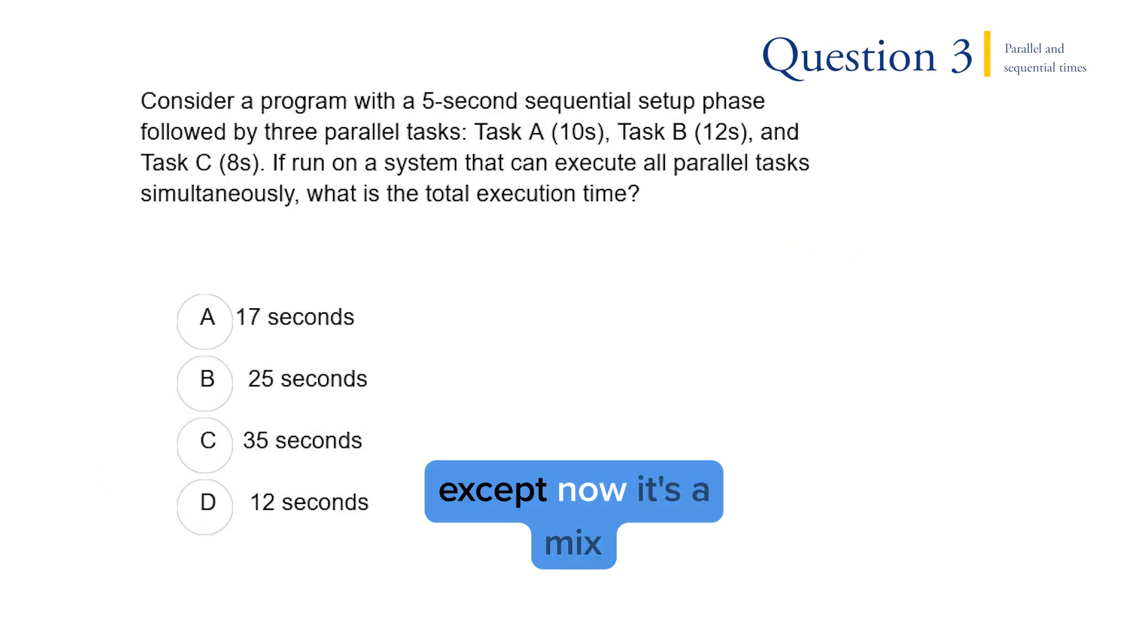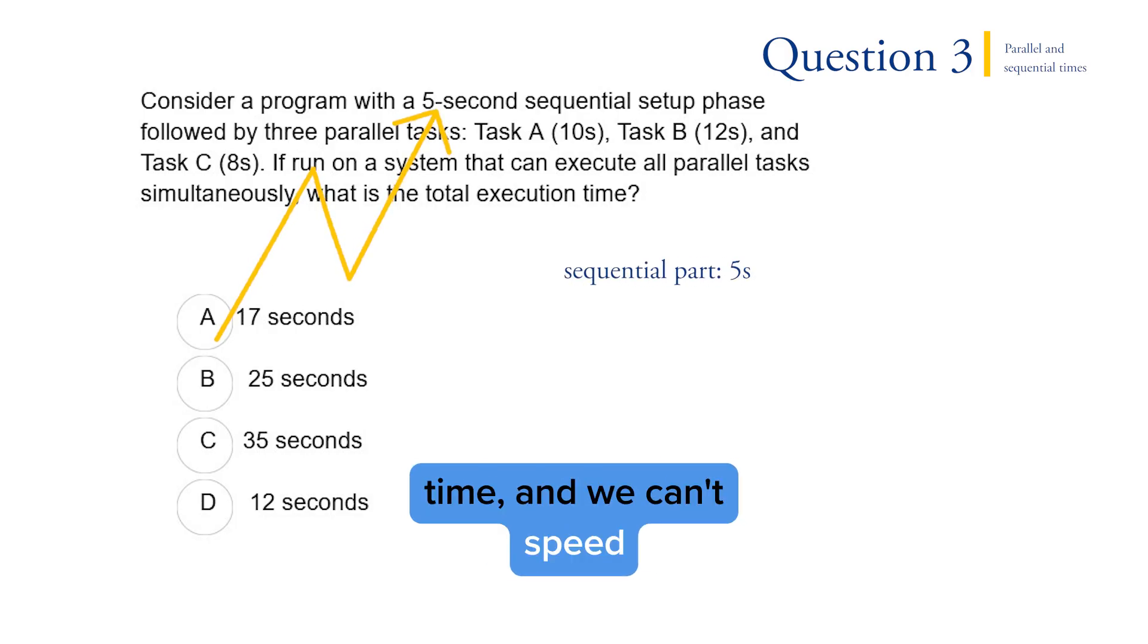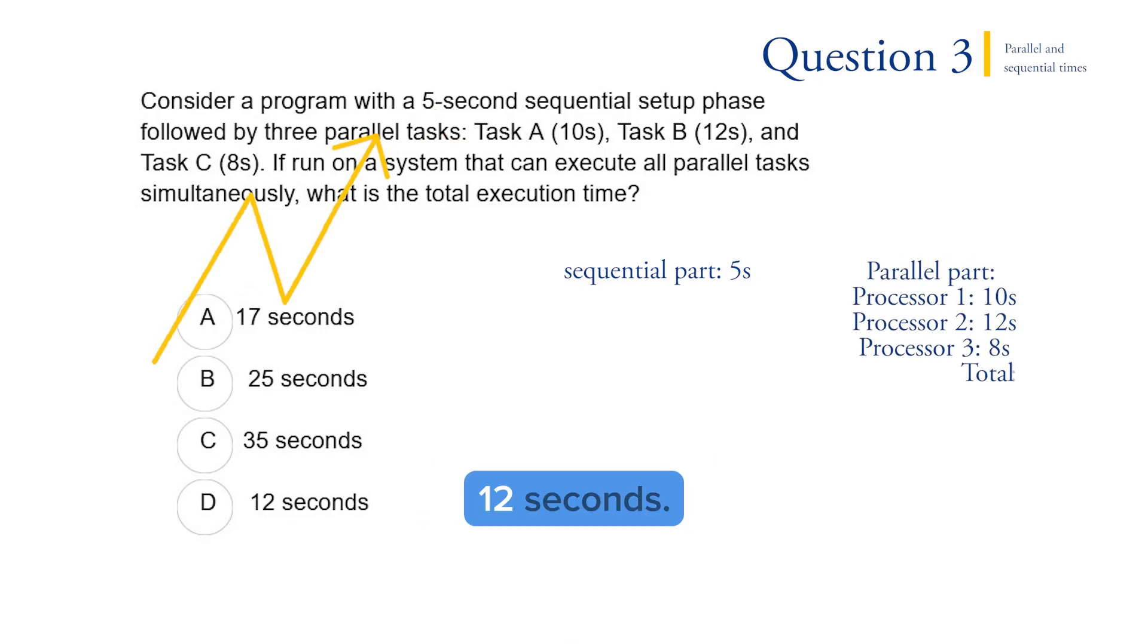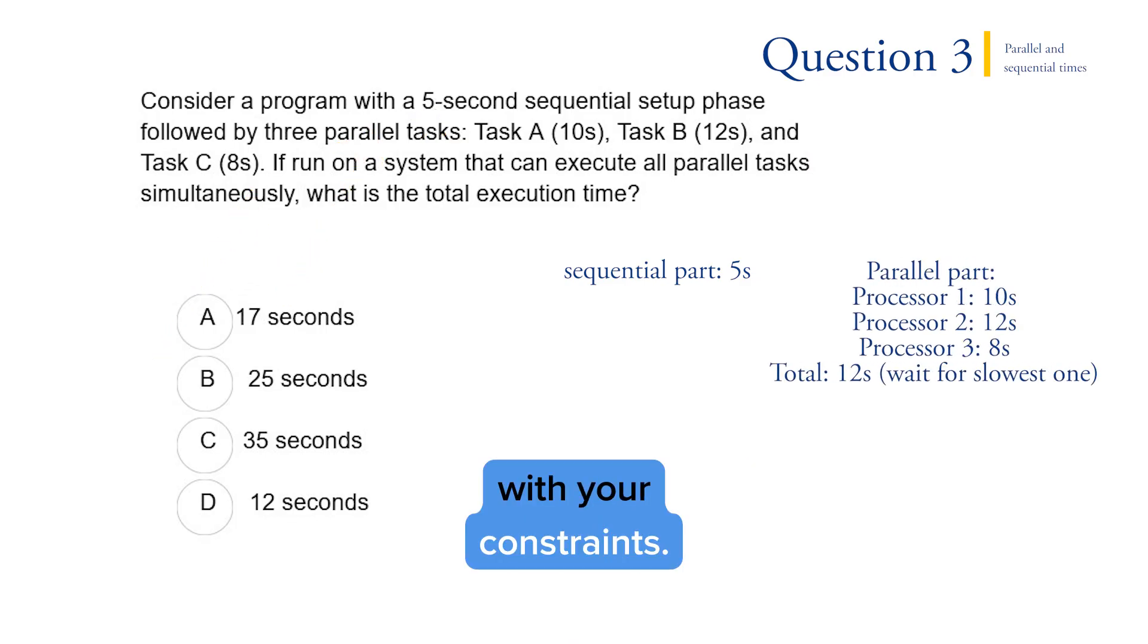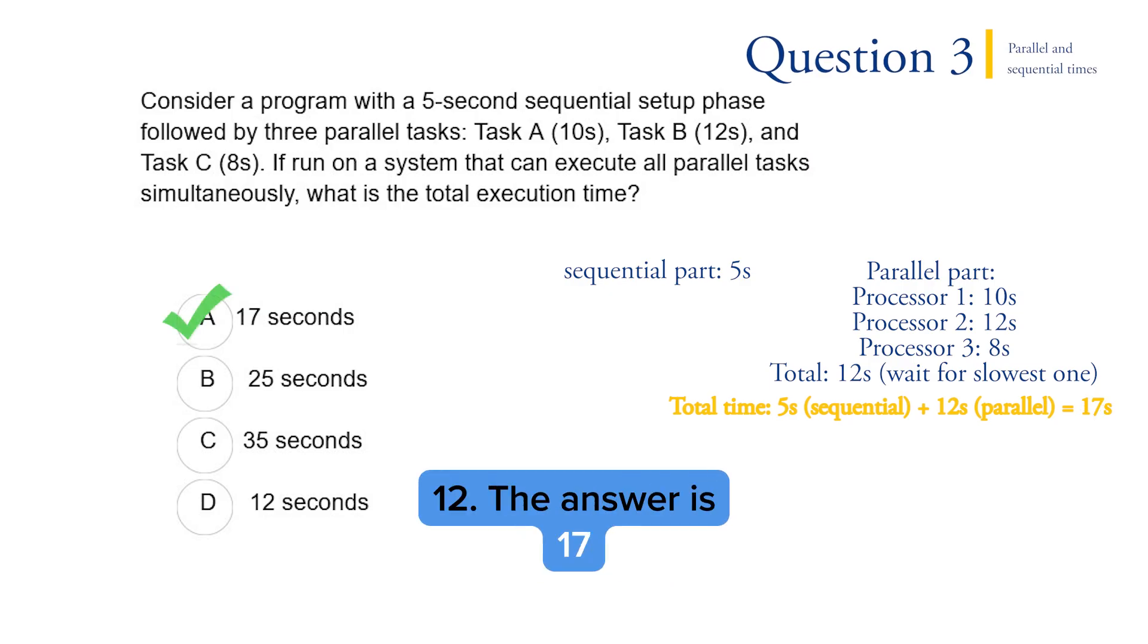Question three. Similar question, except now it's a mix of sequential and parallel components. So the sequential part is 5 seconds. Again, that's one at a time and we can't speed that up. The parallel part is 12 seconds. Here you have to be careful with your constraints. It says you can do them all at the same time, but that's not always going to be the case, so you have to be careful there. On this type of question, be on the lookout for a certain number of processors. In this case though, as I said, we can do them all at the same time. Remember, we have to wait for the slowest one, which is 12 seconds. So the parallel portion takes 12 seconds. So the full time is sequential plus parallel. That means 5 plus 12. The answer is 17 seconds, A.